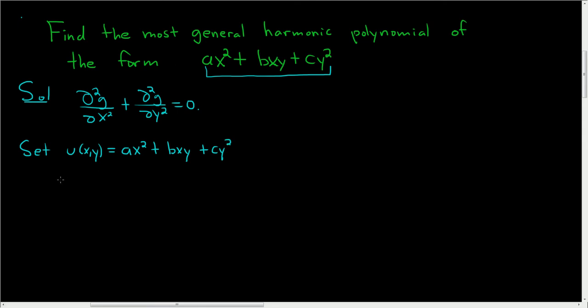And now we'll compute the partial derivatives. So del u del x, so we're taking the partial of u with respect to x. So we're treating y's as constants. So this is 2ax plus by. Then we have to do it again. So taking the second derivative, we end up with simply 2a, because the derivative of by is 0.